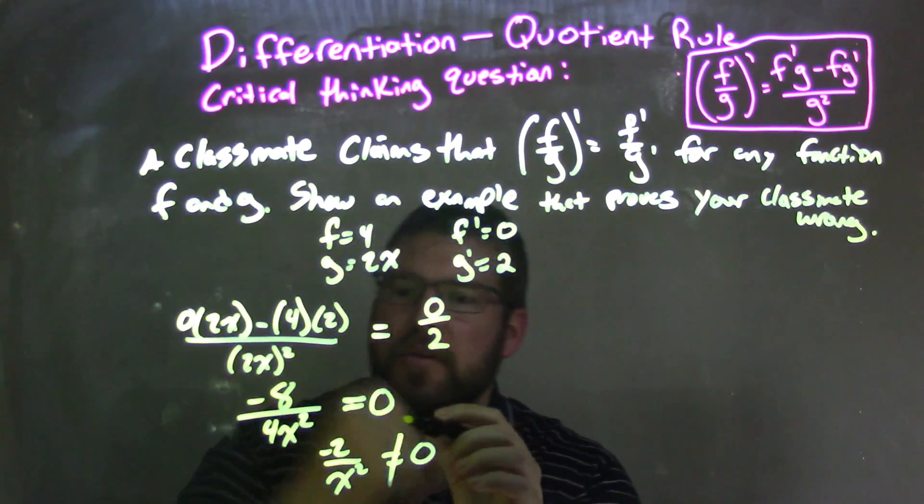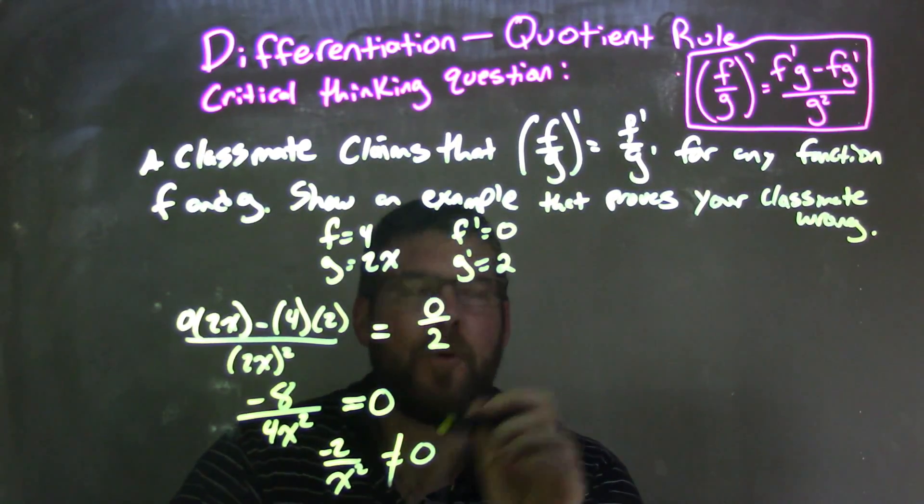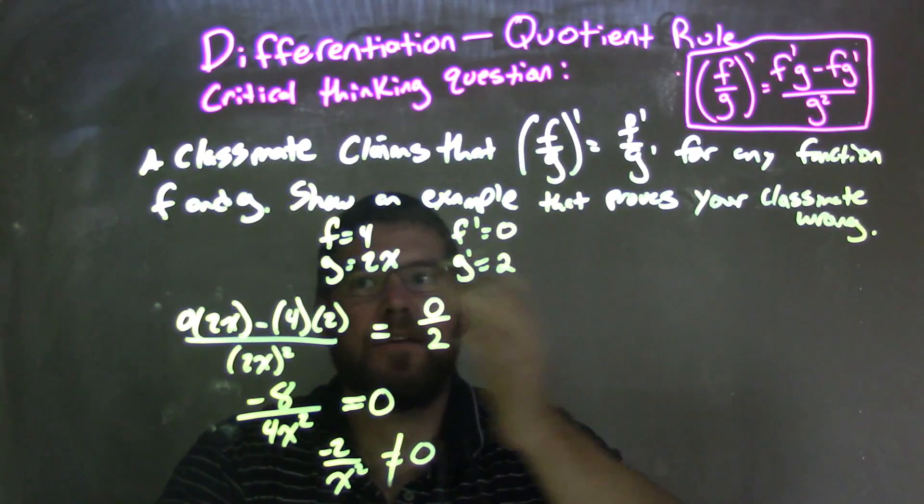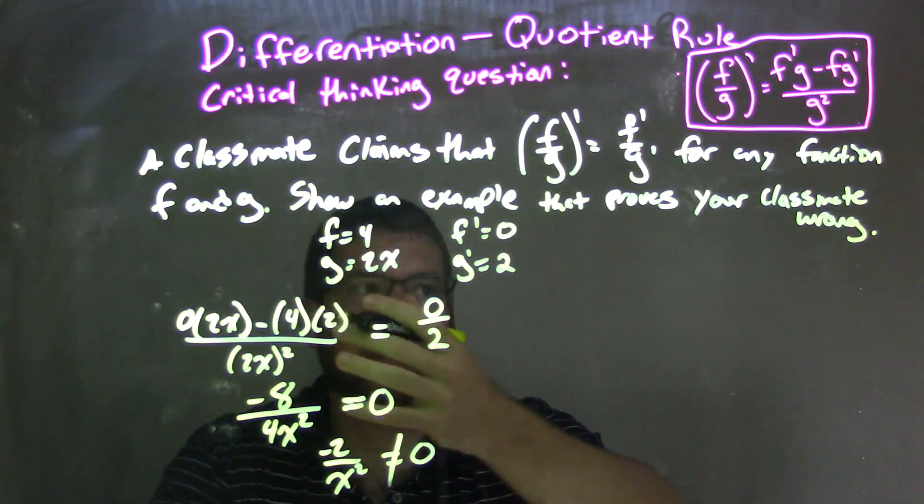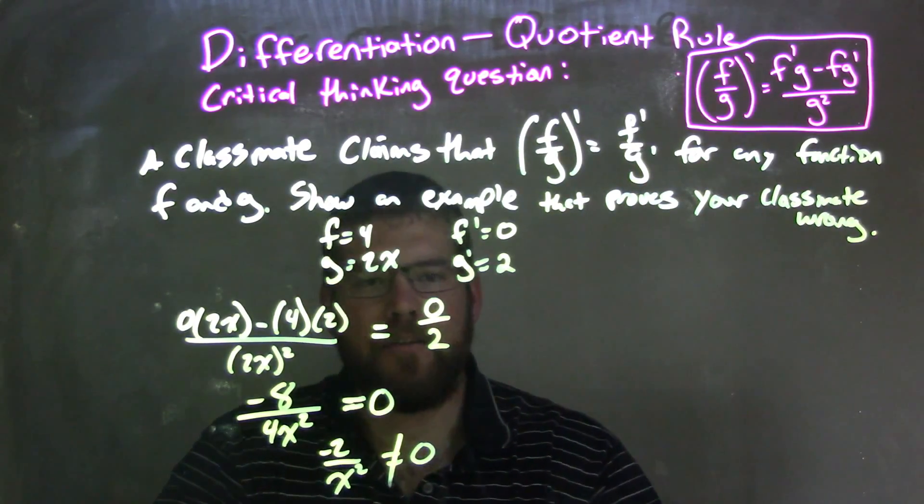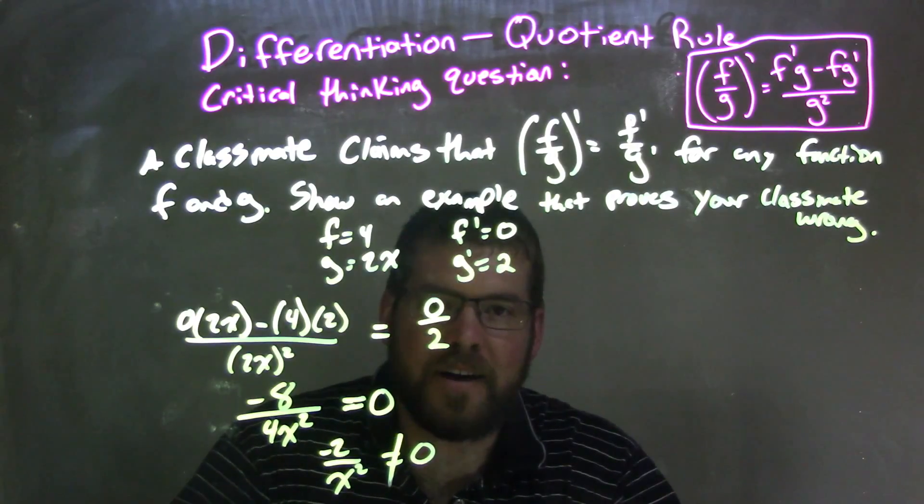So since they're not equal, my classmate is wrong. And we can say, hey, we found a case, we found a function, f and g function, that this doesn't work. Because our classmate claimed that it worked for any function f and g. And that is our final answer.